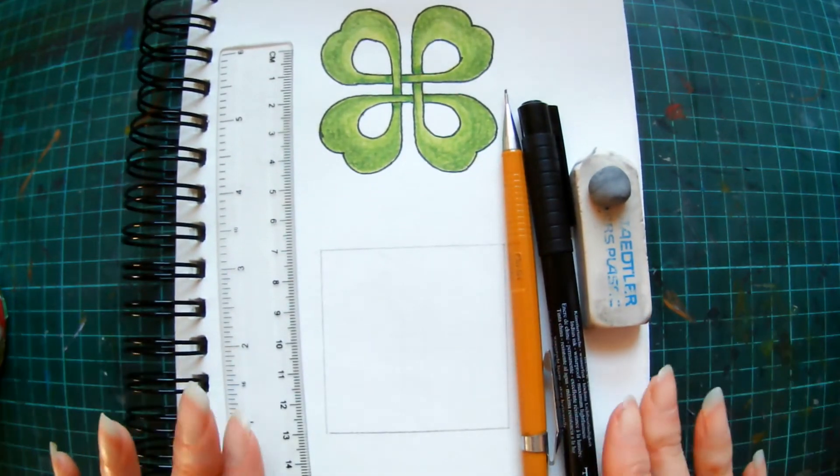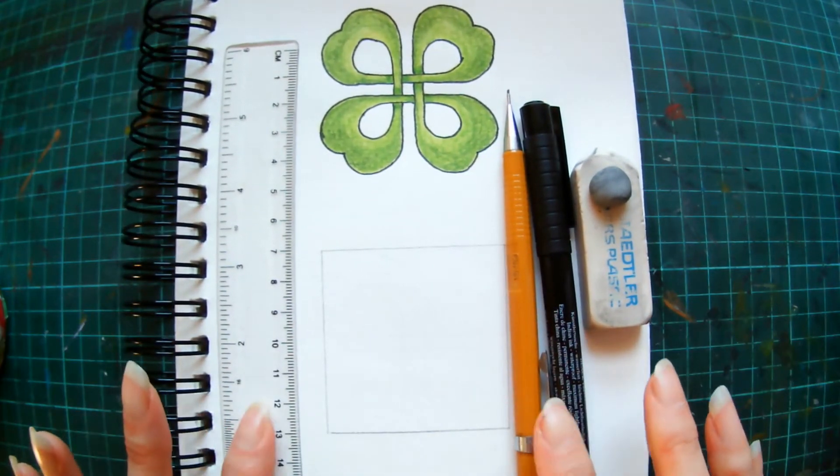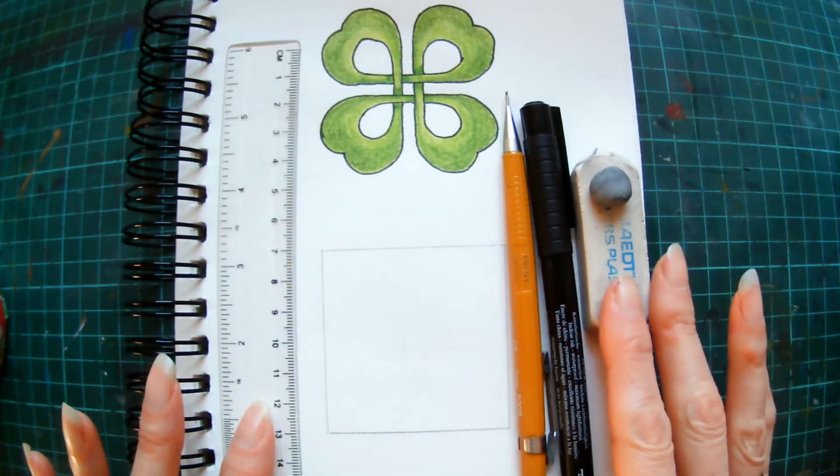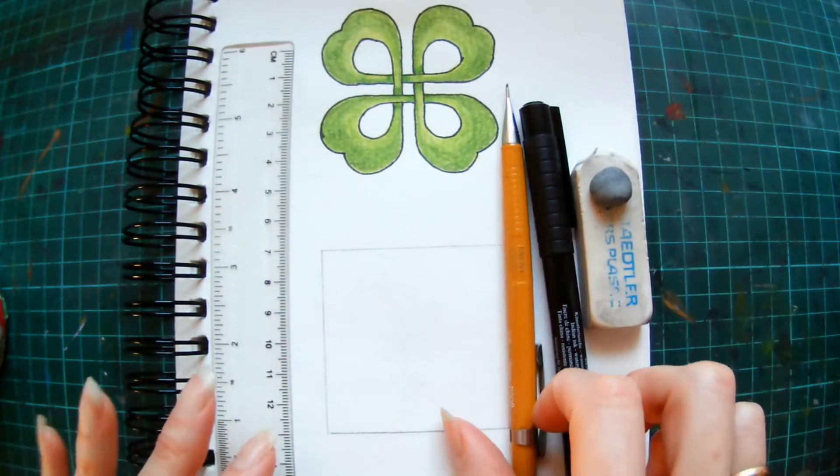The materials are very basic. We just need some paper, a ruler, pencil, fine liner pen, and a rubber. I've also got a putty rubber as well.